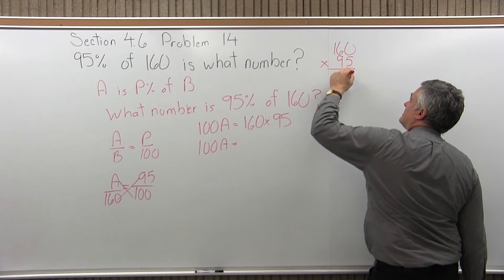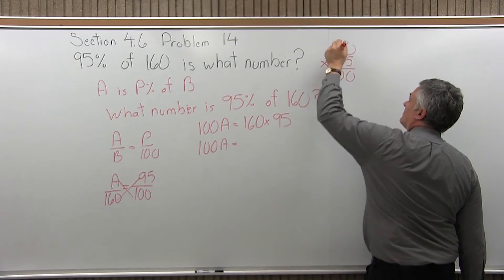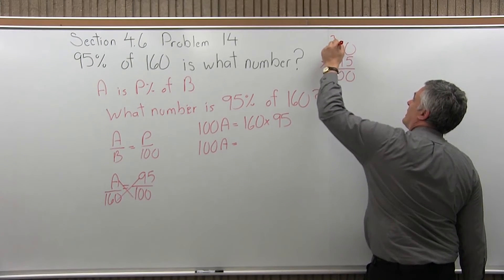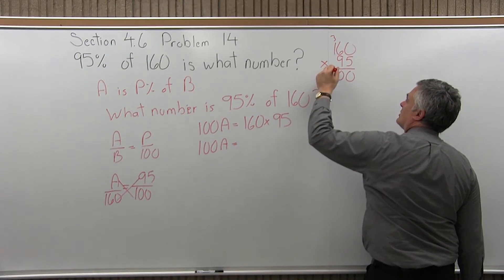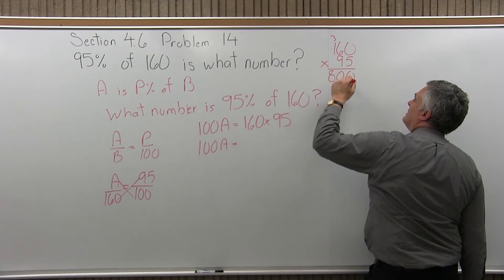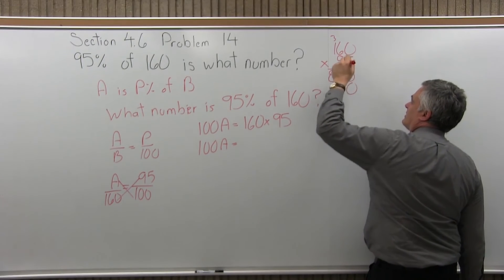160 times 95. So 5 times 0 is 0. 5 times 6 is 30. Write the 0 from the 30, carry the 3. 5 times 1 is 5, plus the 3 more that we carried. 5 and 3 more is 8. Now start the next row by putting a 0 to hold your place.